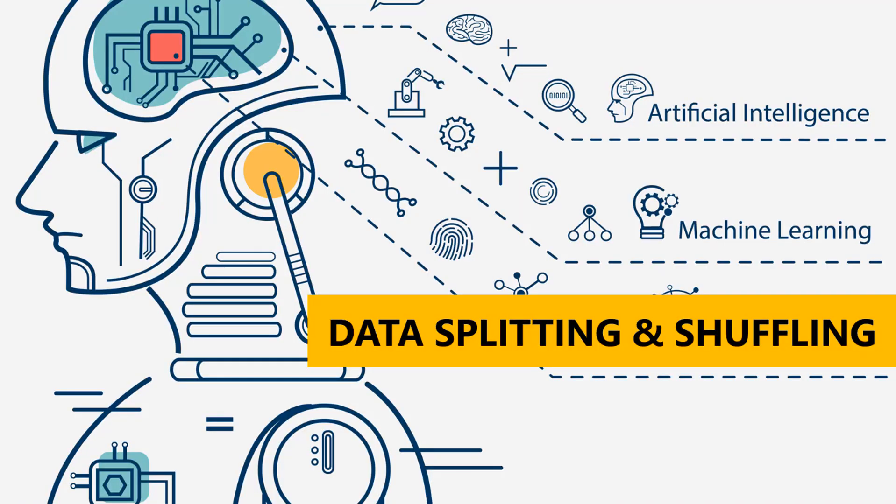Welcome back. Moving forward, I'm going to talk about data splitting and shuffling in the next five or six slides so that you're comfortable with the concept. I'm going to demonstrate all of this later on after this section is completed, so you will not only know the concepts but also the hands-on application. Right now we're going to talk about data splitting and shuffling and why it's important in machine learning.